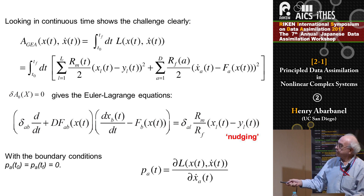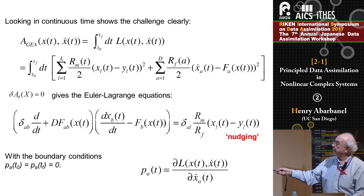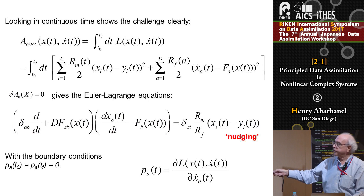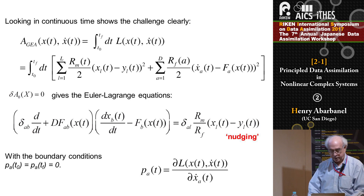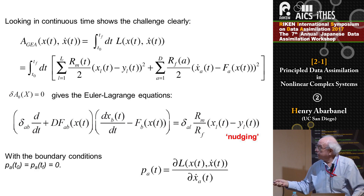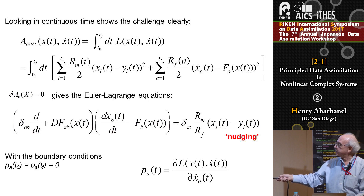Look at the Euler-Lagrange equations for this standard action. Here are the dynamics of the underlying model. Here is an additional factor due to the fact that this dynamics is second order in time because it involves x-dot squared. On the right-hand side there's a term that comes from the measurement error, and this is nudging. Nudging comes directly out of the formulation of the data assimilation problem as a statistical physics problem. The nudging comes in an equation in which the boundary conditions are that the canonical momentum — namely the variation of the Lagrangian integrand with respect to x-dot — is zero at both ends.